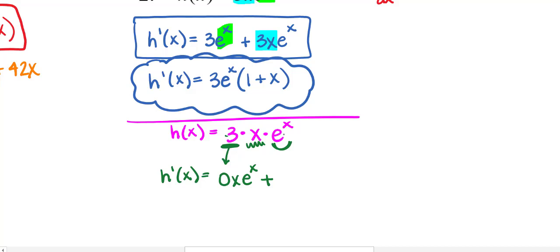And now the three and the e to the x are going to stay times the derivative of the second factor. Derivative of x is one, plus now the first two factors stay and I'll do the derivative of the third factor. The derivative of e to the x is e to the x. So I actually end up in the same place because that is all zero.